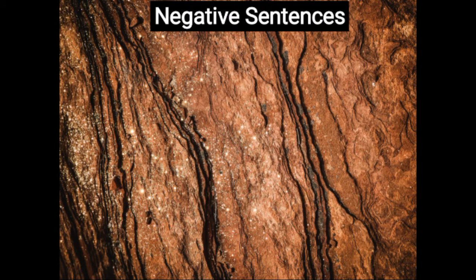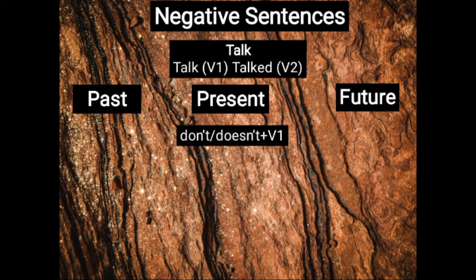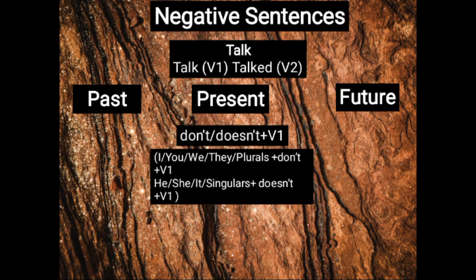Let's understand the negative sentences now using the same word. In the present tense, we use DON'T or DOESN'T to make negative sentences. DON'T is the contracted form of DO NOT, and DOESN'T is the contracted form of DOES NOT — we use contracted forms for fluency. With I, you, we, they, or any plural noun, we use DON'T. And with he, she, it, or any singular noun, we use DOESN'T. Please remember that.